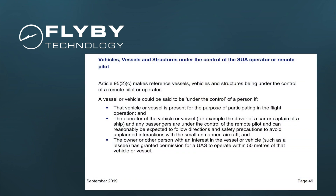So here we are — as you can see we have vehicles, vessels and structures under the control of the SUA operator or remote pilot. Quite rightly it talks about article 95.2 sub C, which makes reference to vehicles, vessels and structures being under the control of the remote pilot or the operator themselves. Now a vehicle or vessel could be said to be under the control of a person if — and that's how they word things quite often.